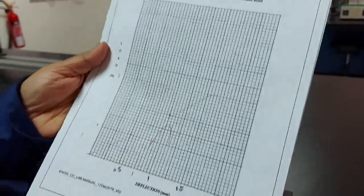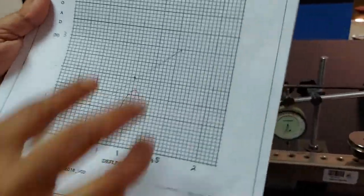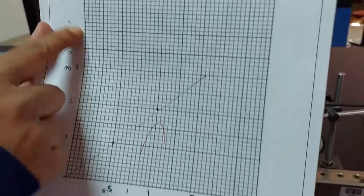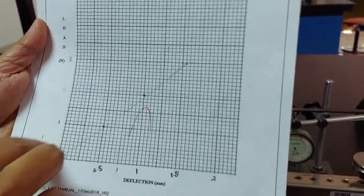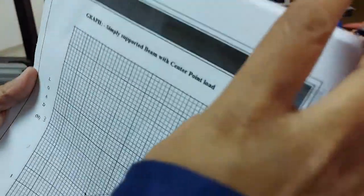And if you take here in the simply supported beam, you need to plot the graph because it is there in the handout for the central point load. You have to take here theoretical deflection, sorry, here it is the load and here you have to take the theoretical deflection, you need to plot the graph.